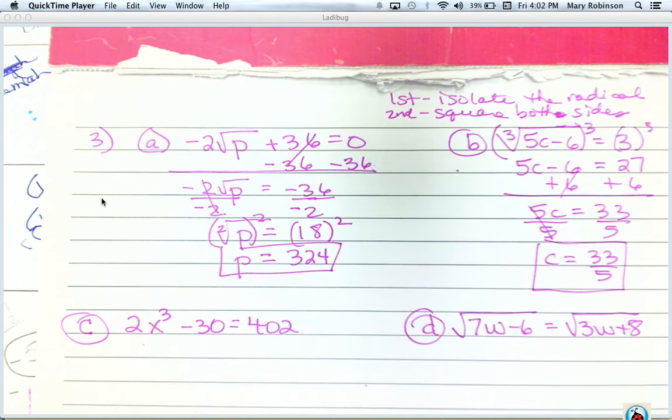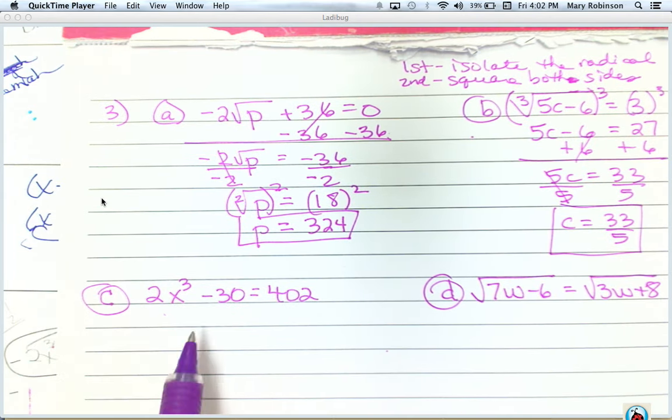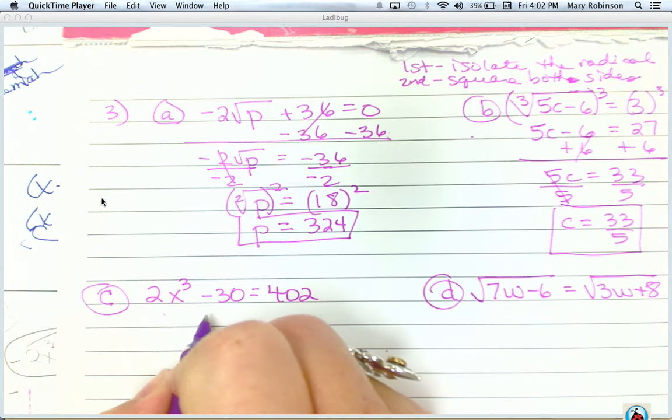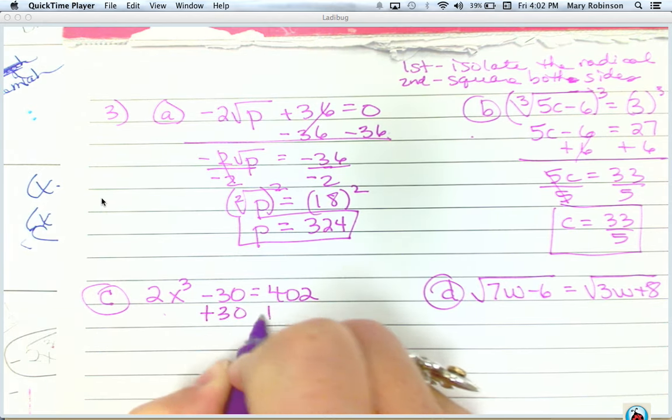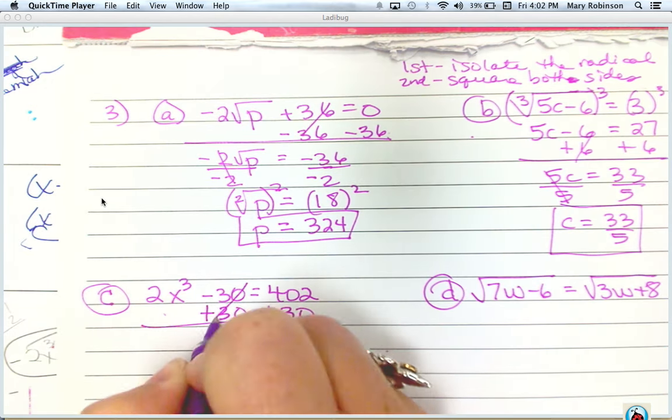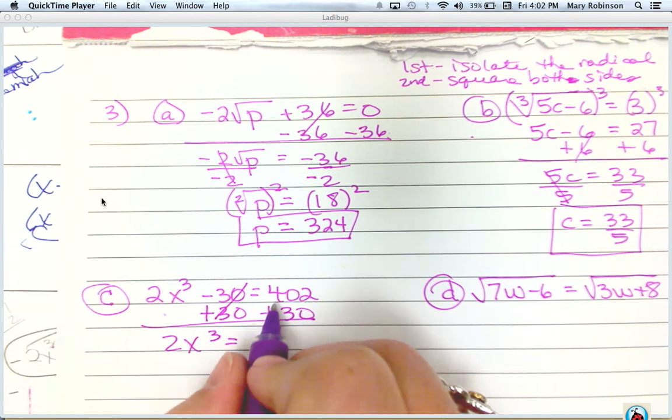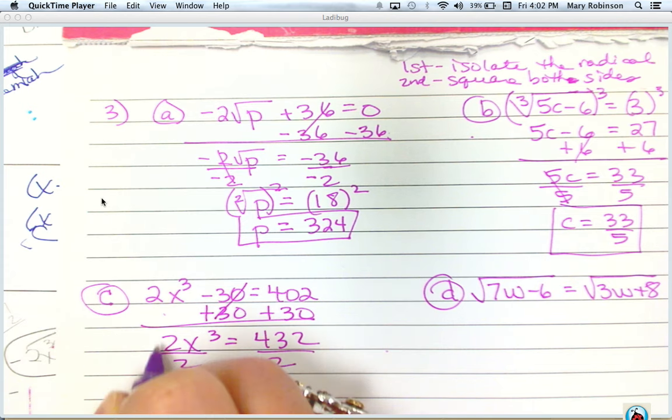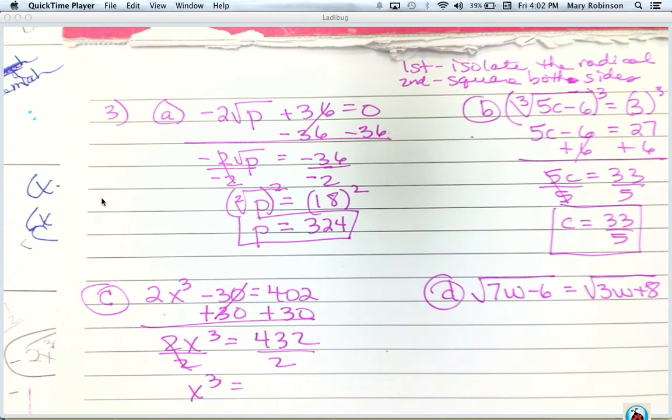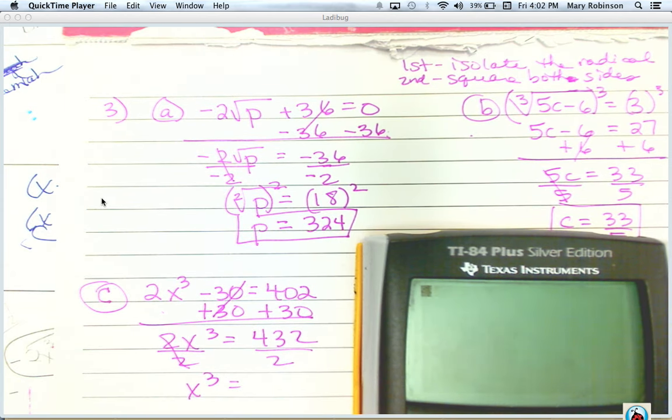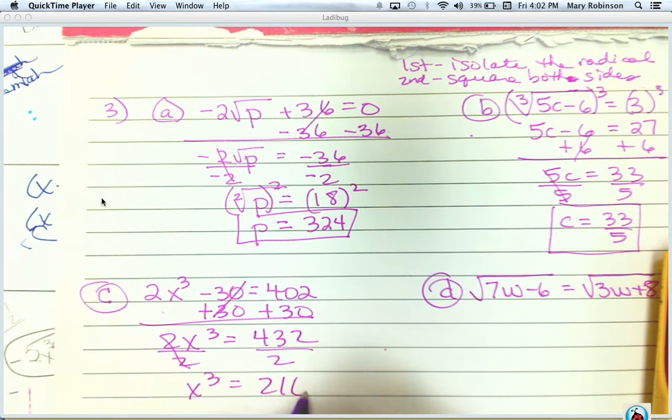Now, c is different. Notice here we have a cubic equation. So, no radical here. We're just going to use inverse operations. 402 plus 30 is 432. 432 divided by 2 is 216.